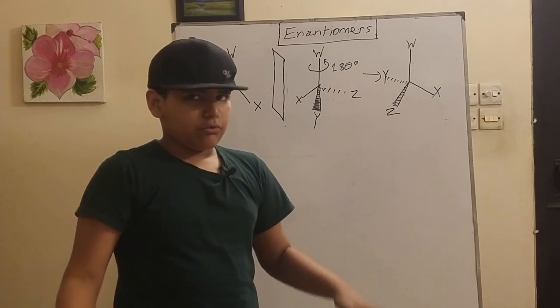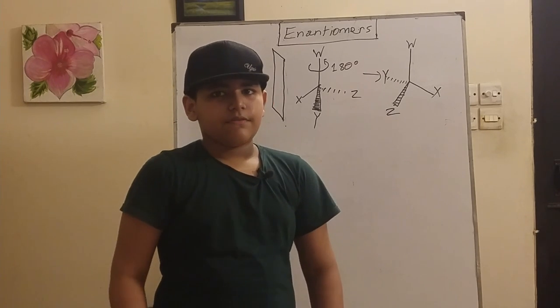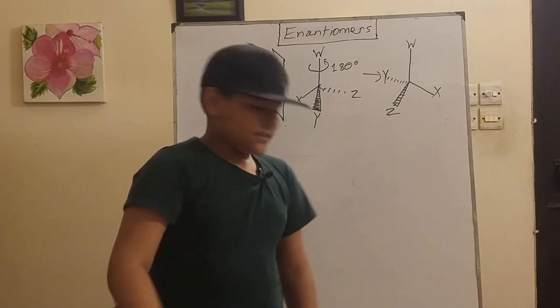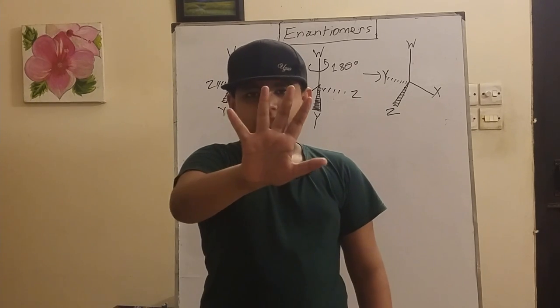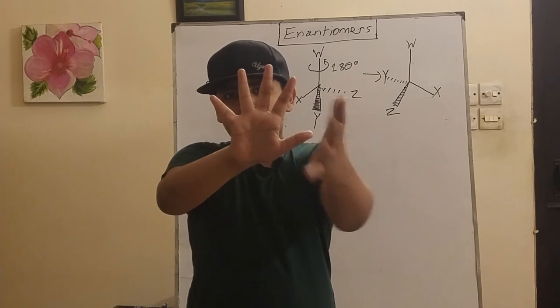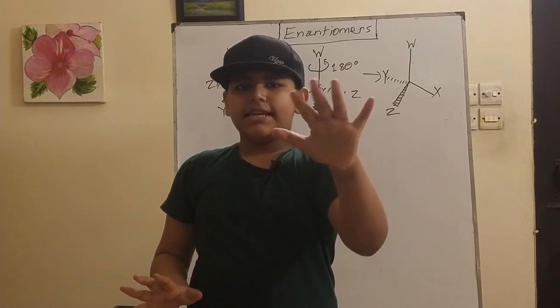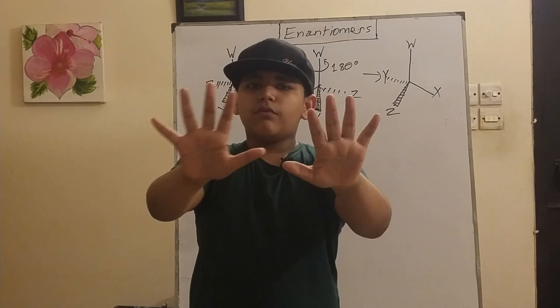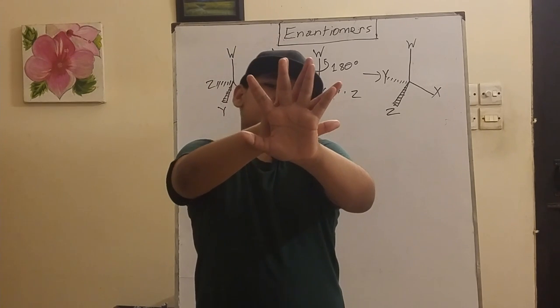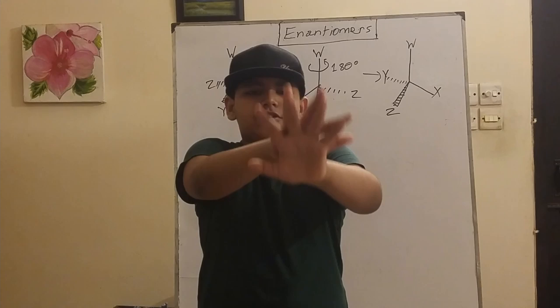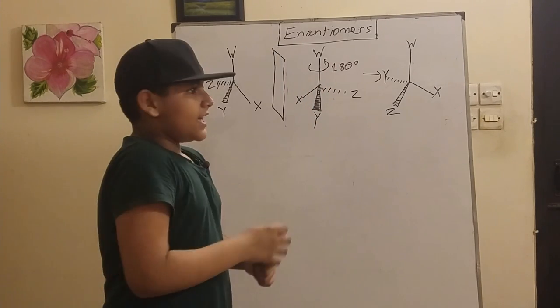And now the best example I have is our hands. If I were to take the mirror image of this hand, I'd get this hand. Now if I rotate this hand 180 degrees and try to overlap the hands, I won't be able to connect the fingers properly. I won't get to overlap it properly. That's basically what an enantiomer is.